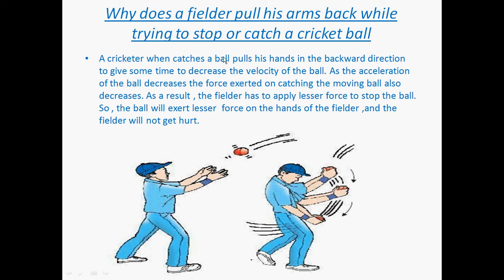A cricketer, when catching the ball, pulls his hand in the backward direction. The cricketer pulls his hand backward to get some time to decrease the velocity of the ball. By lowering his hand, he is increasing the time to decrease the velocity of the ball. When the time increases, force automatically decreases. As acceleration of the ball decreases — from the formula force equals MA — if acceleration decreases, the force will also decrease.